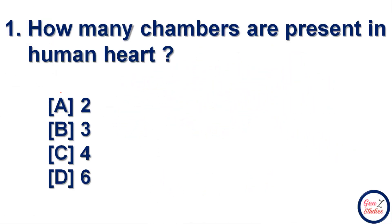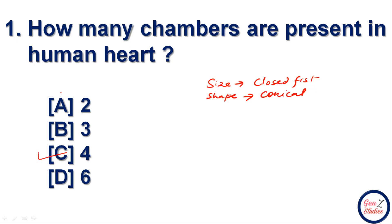First question: how many chambers are present in the human heart? Options are two, three, four, or six. The correct answer is four — human heart me four chambers hote hain, so option C is correct. If asked about the size of the human heart, it is the size of a closed fist. And its shape is conical.